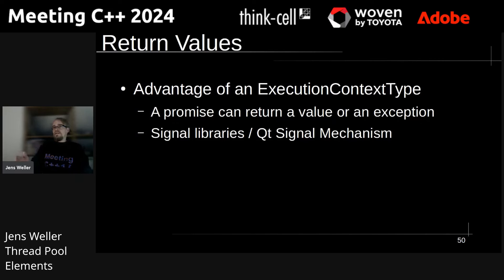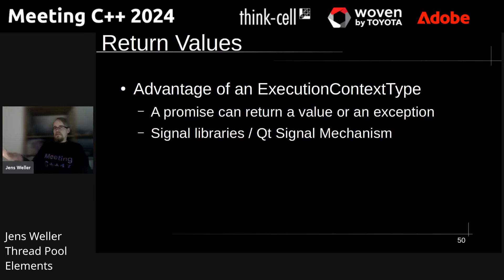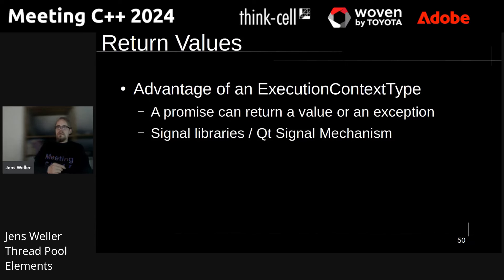The advantage of an execution context type is that you can have a promise which holds either an exception or the return value. Signal libraries also exist, so return values can be handled by a signal. But that is basically the job of the user, not of the thread pool itself.